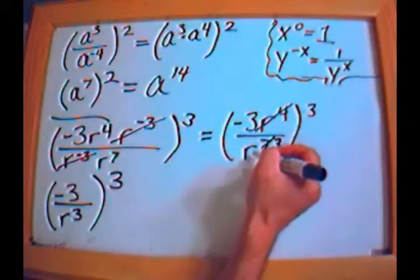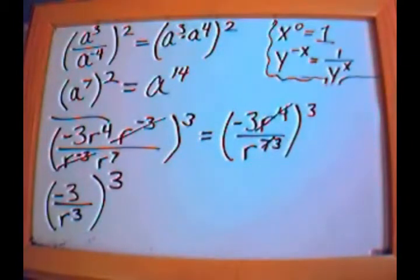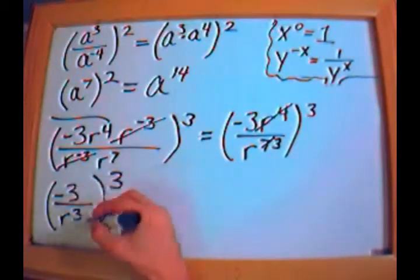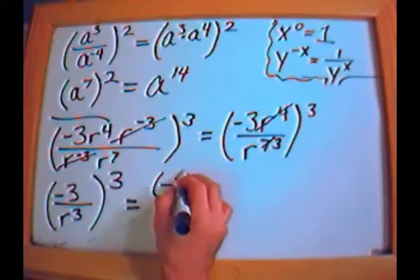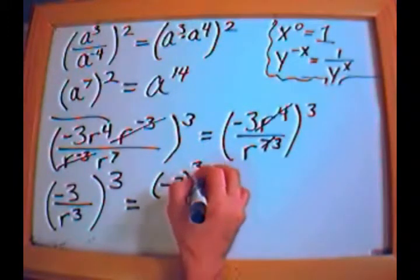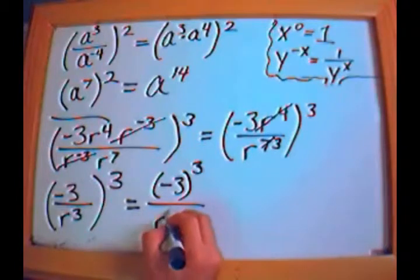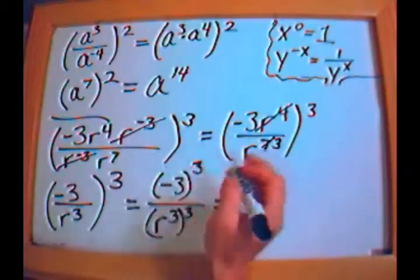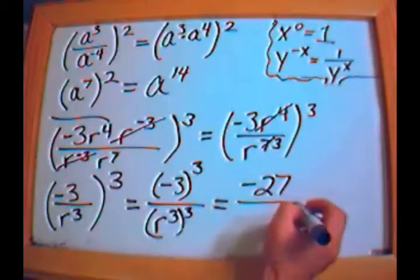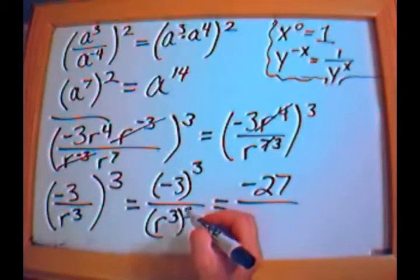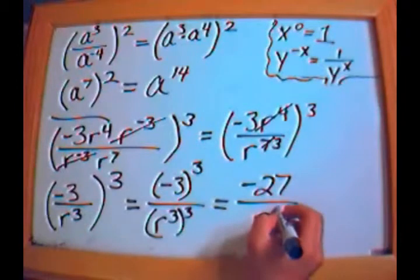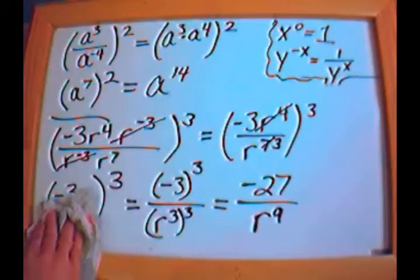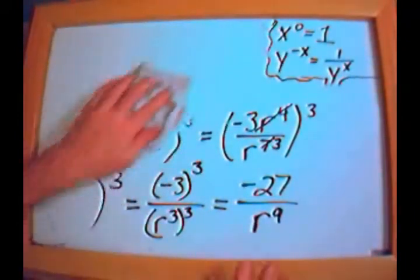Applying the exponent to the fraction separately: negative 3 raised to the third power equals negative 27 (you can check that). On the bottom, r cubed raised to the third power: 3 times 3 is 9, giving r to the ninth. The final answer is negative 27 over r to the ninth.